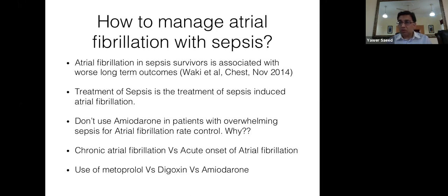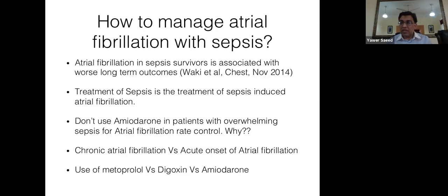In acute sepsis with AF, the treatment of sepsis is the treatment of the AF. Do not try to aggressively lower the heart rate, as this may cause hypotension. Use good fluid management and antibiotics. Do not cardiovert, do not give amiodarone, do not give beta blockers. If the rate is 130-140 and the patient is maintaining blood pressure, that is acceptable.